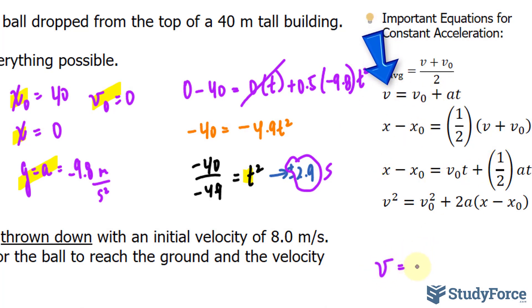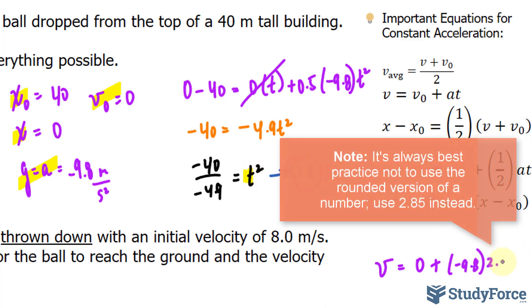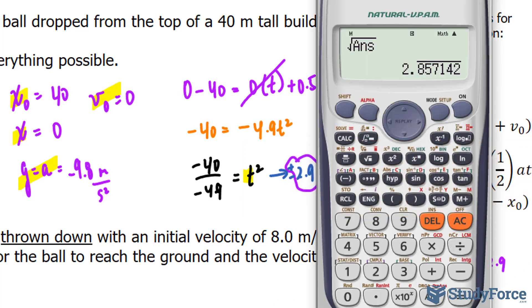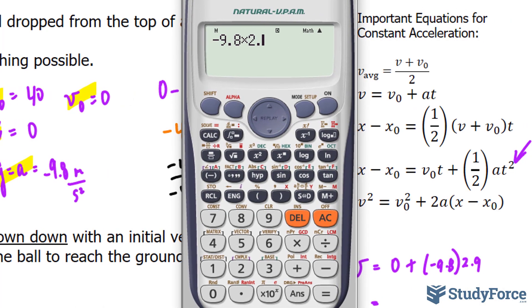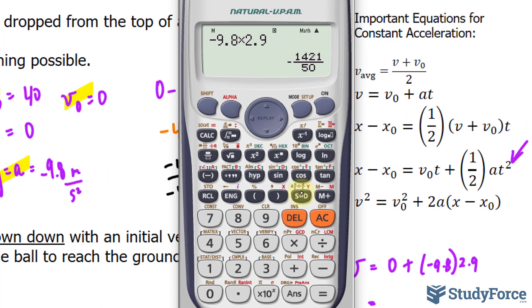So the final velocity is equal to the initial plus the acceleration of negative 9.8 times the time which is 2.9. So multiplying that out, negative 9.8 times the time of 2.9, I get a velocity, a final velocity of negative 28.42.